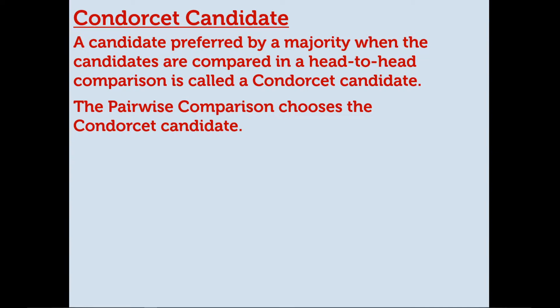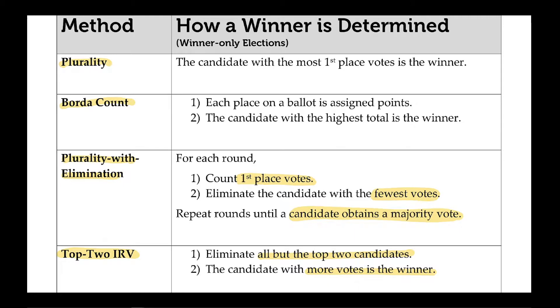That's it for the pairwise comparison method. This is the last voting method we've been looking at. To briefly recap all the voting methods: we started with the plurality method — the winner is the candidate with the most first place votes. Then we talked about the Borda count method, where each place is assigned points — first place being the highest and going down by one — and the candidate with the highest total wins.